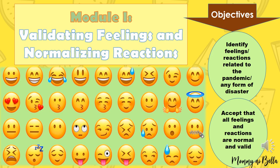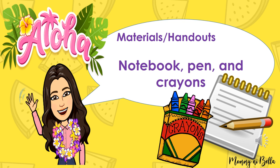Module 1: Validating Feelings and Normalizing Reactions. Objectives: identify feelings and reactions related to the pandemic or any form of disaster, and accept that all feelings and reactions are normal and valid. Materials for today: notebook, pen, and crayons.